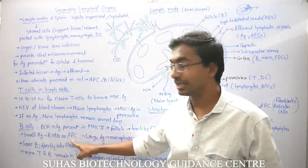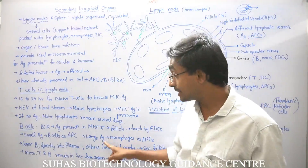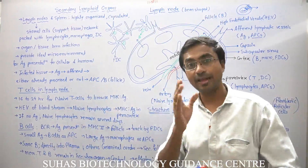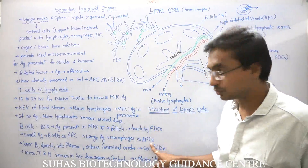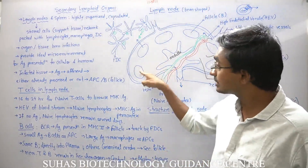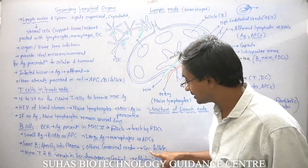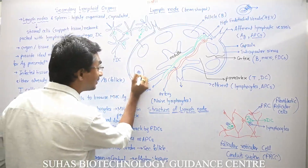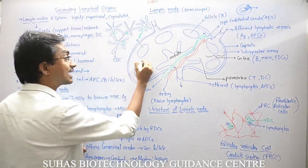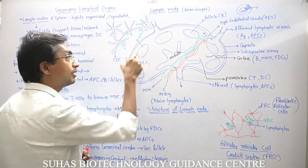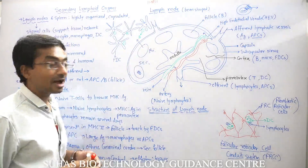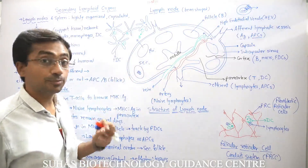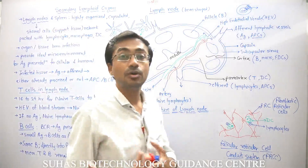If the antigen is small, B lymphocytes themselves act as APCs. If the antigen is large, macrophages — being phagocytic cells — come forward to engulf, process, and present it via MHC class 2. These follicles sometimes have germinal centers inside them; if a germinal center is present, it is called a secondary follicle, and if not, a primary follicle. So primary and secondary are the two types of follicles in the lymph node, with secondary follicles being sites of active antigen presentation and richer in B lymphocytes.